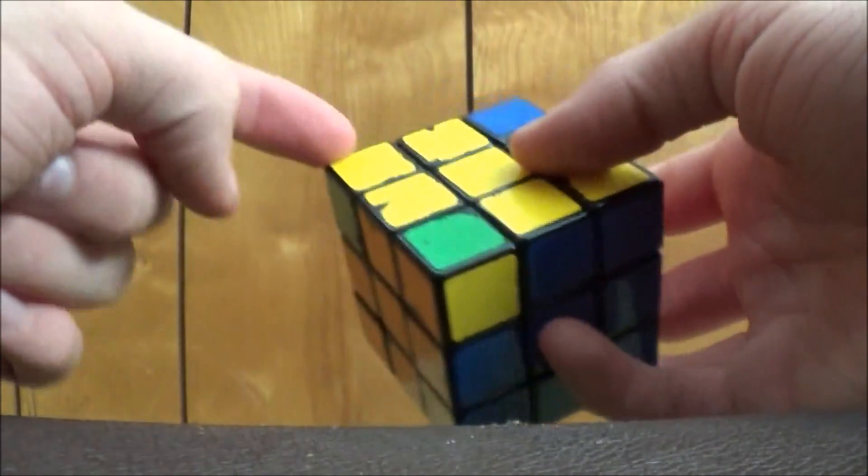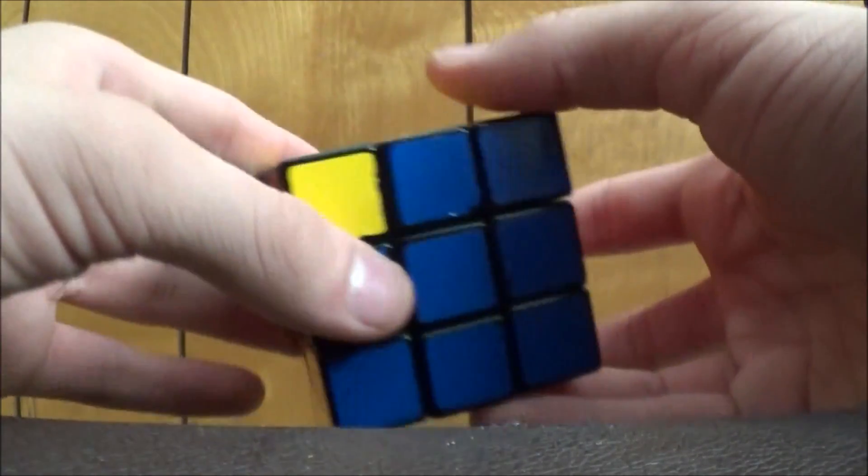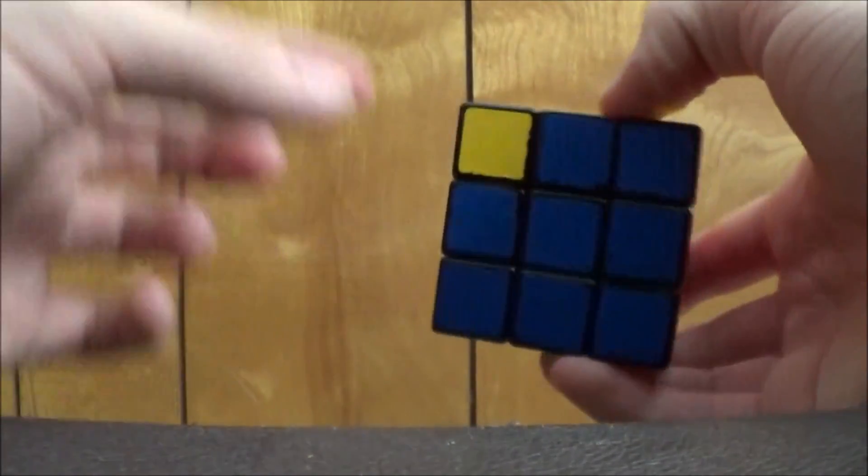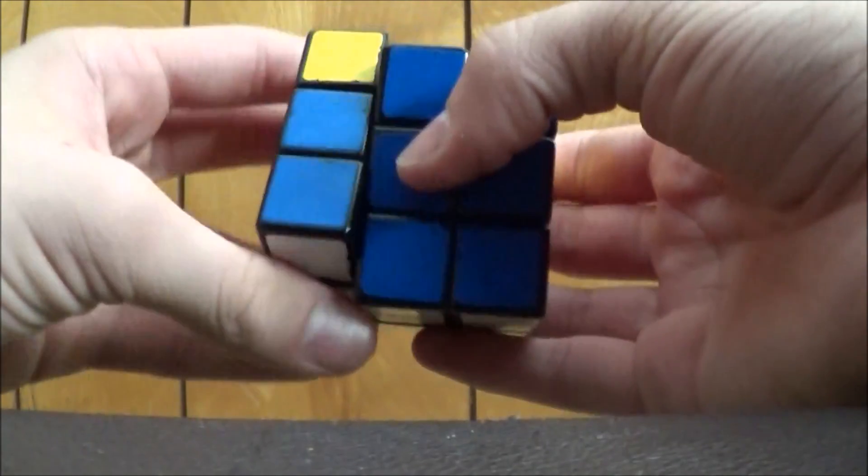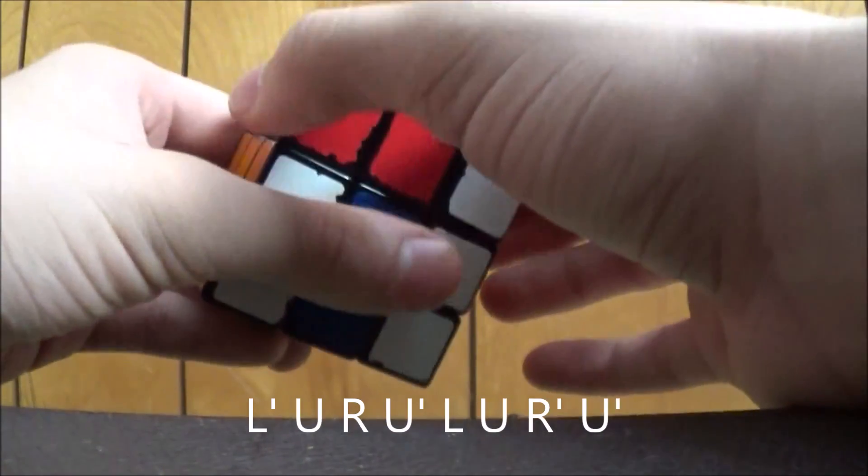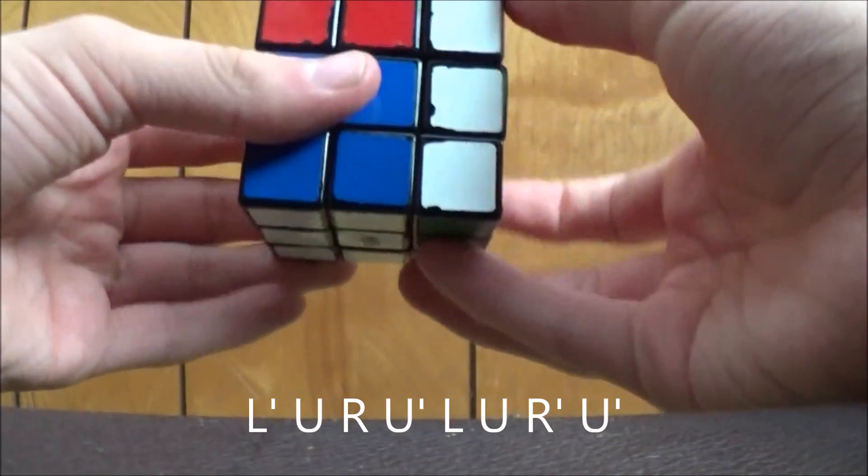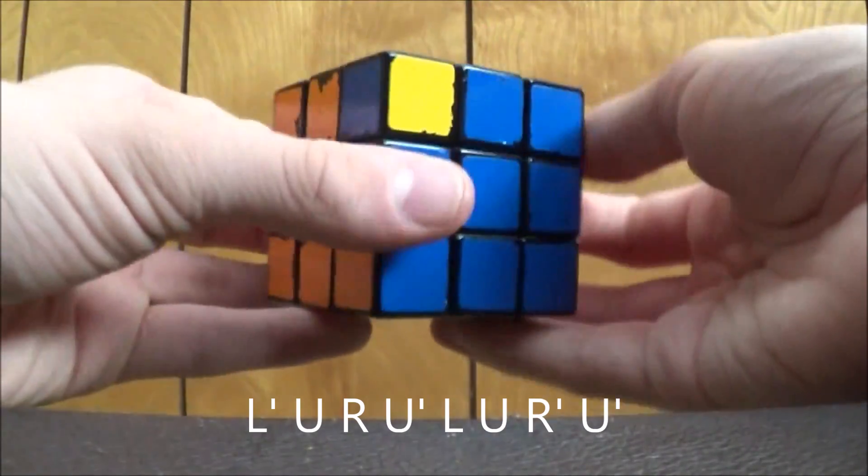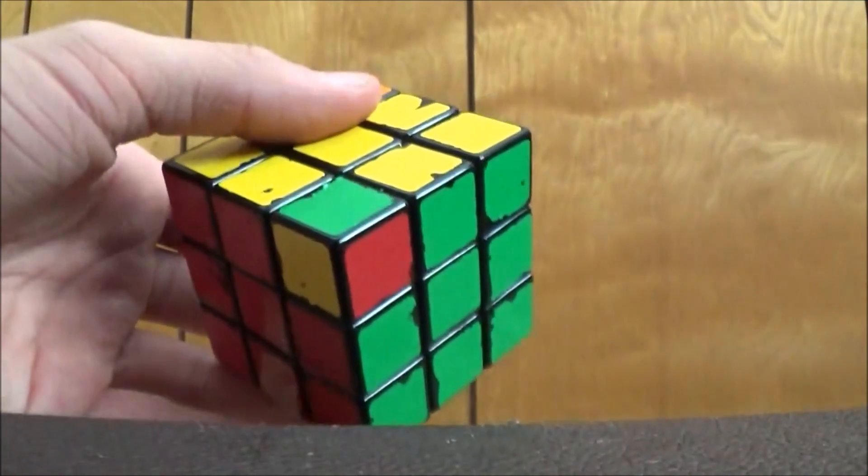However, when it's like this, you can do the algorithm backwards to switch them clockwise instead of counterclockwise. So the algorithm clockwise, or the algorithm backwards, is L prime, U, R, U prime, L, U, R prime, U prime. And the corners have now been switched in their correct places on the cube.